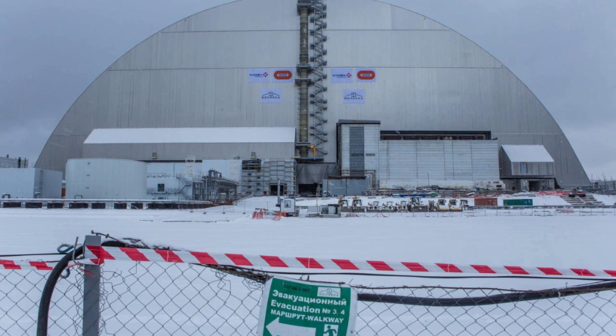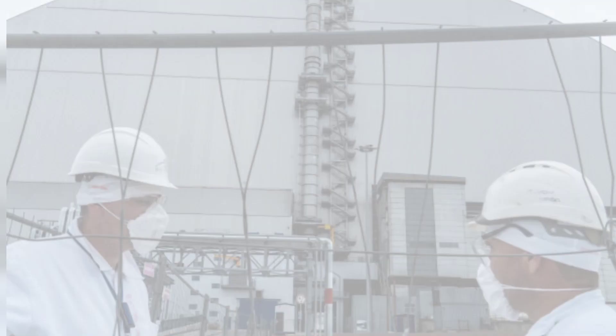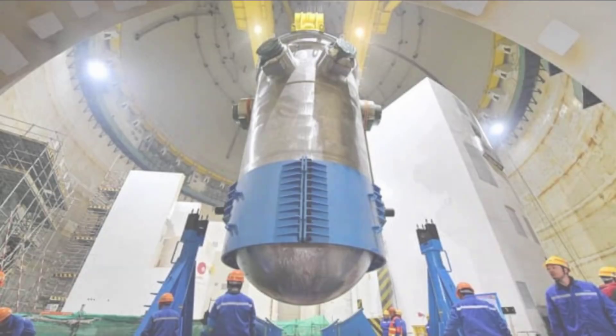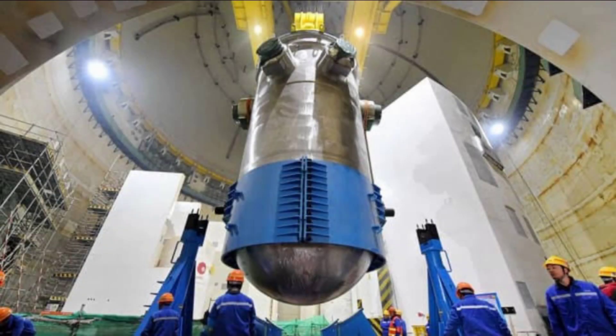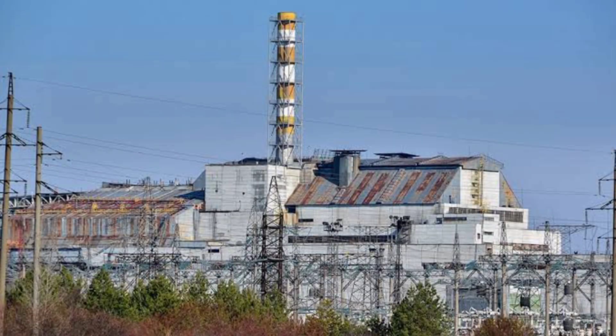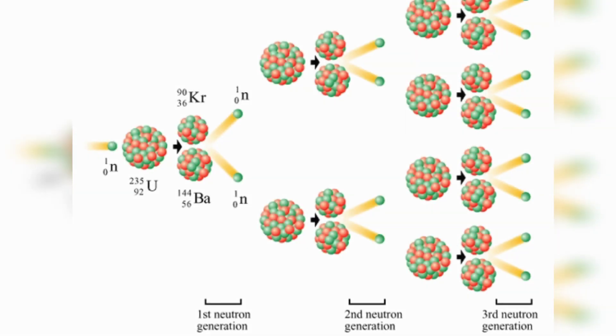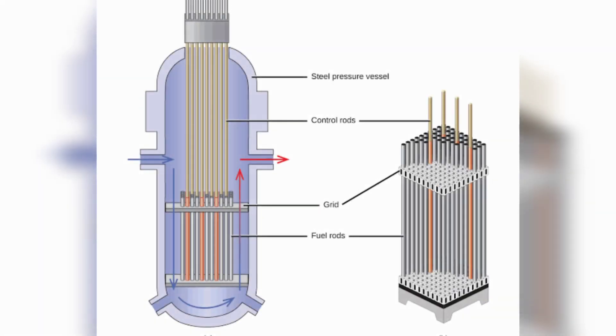When this heat is absorbed, it is converted to steam. The steam drives a turbine. The nuclear fission process is self-sustaining — this is because it produces a chain reaction.